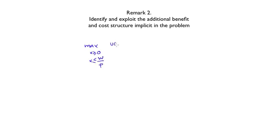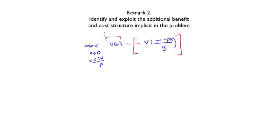The second remark is that you should try to identify and exploit the additional benefit and cost structure implicit in the problem. At first sight, when the problem is written as: maximize over x in [0, W/P] the quantity u(x) plus v((W minus Px)/Q), the objective function looks like the addition of two benefit functions — it doesn't seem to have the benefit-cost structure that proved so useful before. However, if you stop to think, you will see that the benefit and cost structure is also implicit here. We can rewrite this by introducing a minus sign: calling one part the benefit function and the other the cost function.